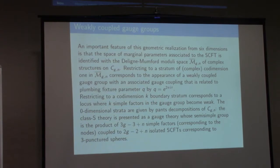When you restrict to codimension K boundary strata, you get K factors in the gauge group that all become weak. You can go all the way to the zero-dimensional isolated boundary strata. Those involve 3g minus 3 plus N factors, which correspond to the nodes of a pants decomposition of the curve. You have 2g minus 2 plus N isolated superconformal field theories that you're dividing.